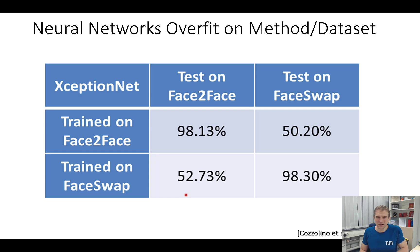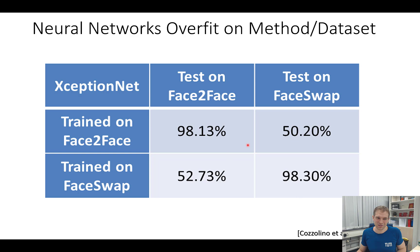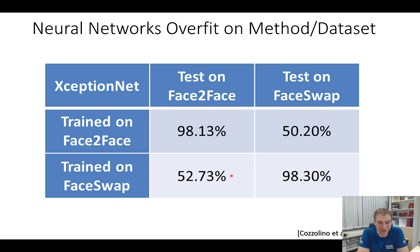This problem gets worse because stronger neural networks overfit more. The stronger we made the network, the higher the in-domain numbers got, but the lower the cross-method transferability got. So we have an interesting trade-off between transferability and performance on the actual task. We're facing the classical problem in computer vision: optimizing for a dataset while ignoring the real practical problem. The same issue applies to datasets — if you train on one dataset created with one specific pipeline and test on in-the-wild videos, there's a massive drop in performance.